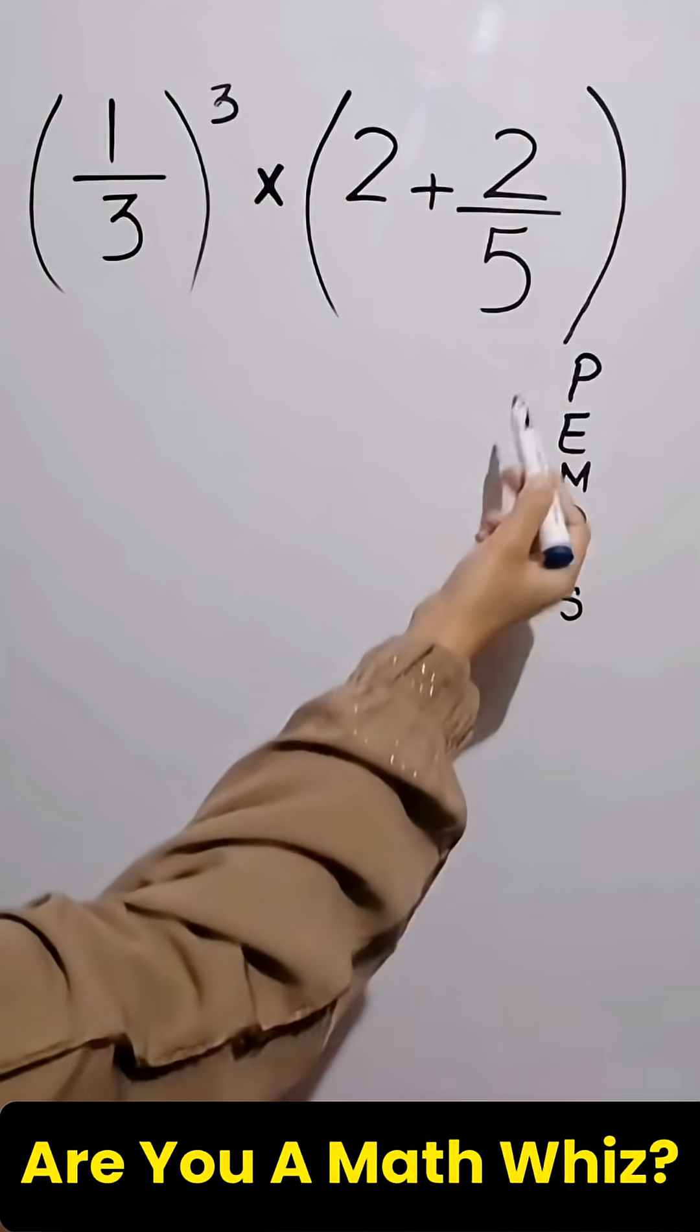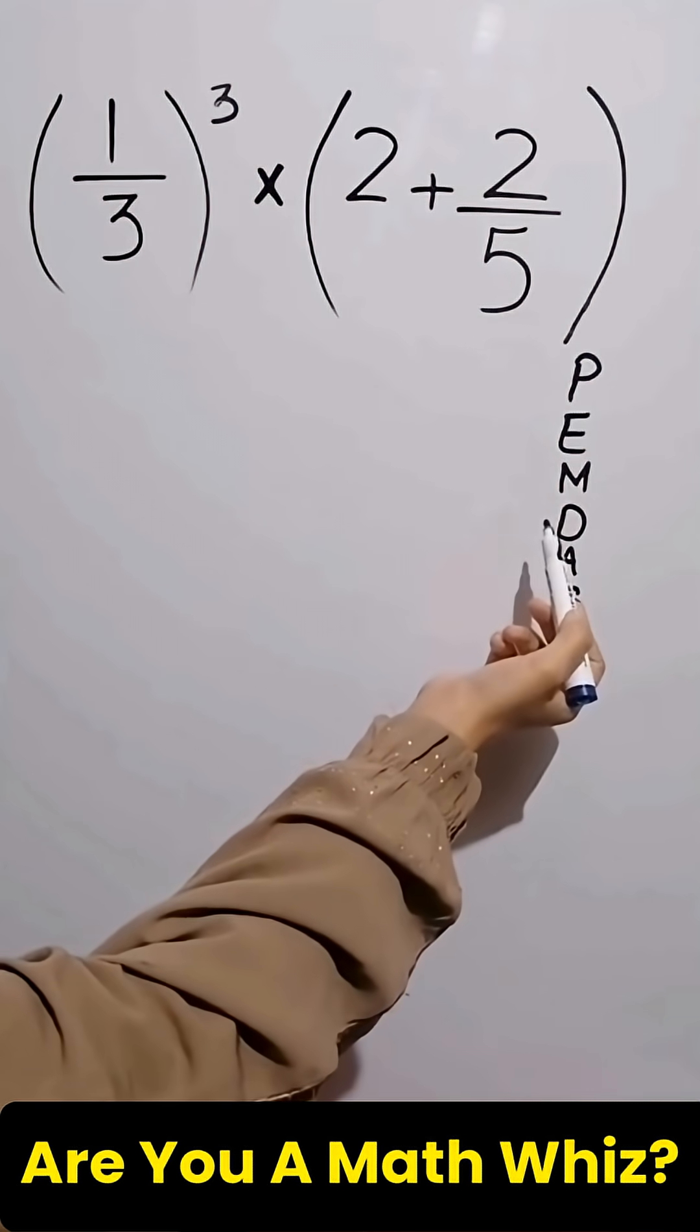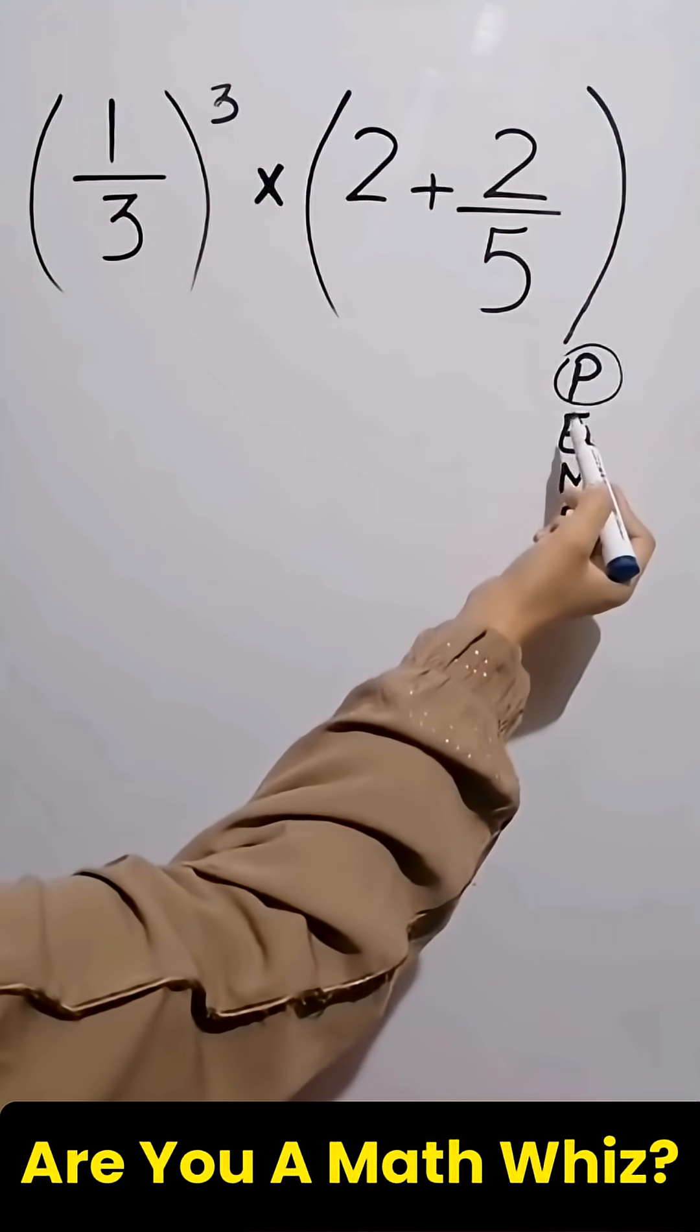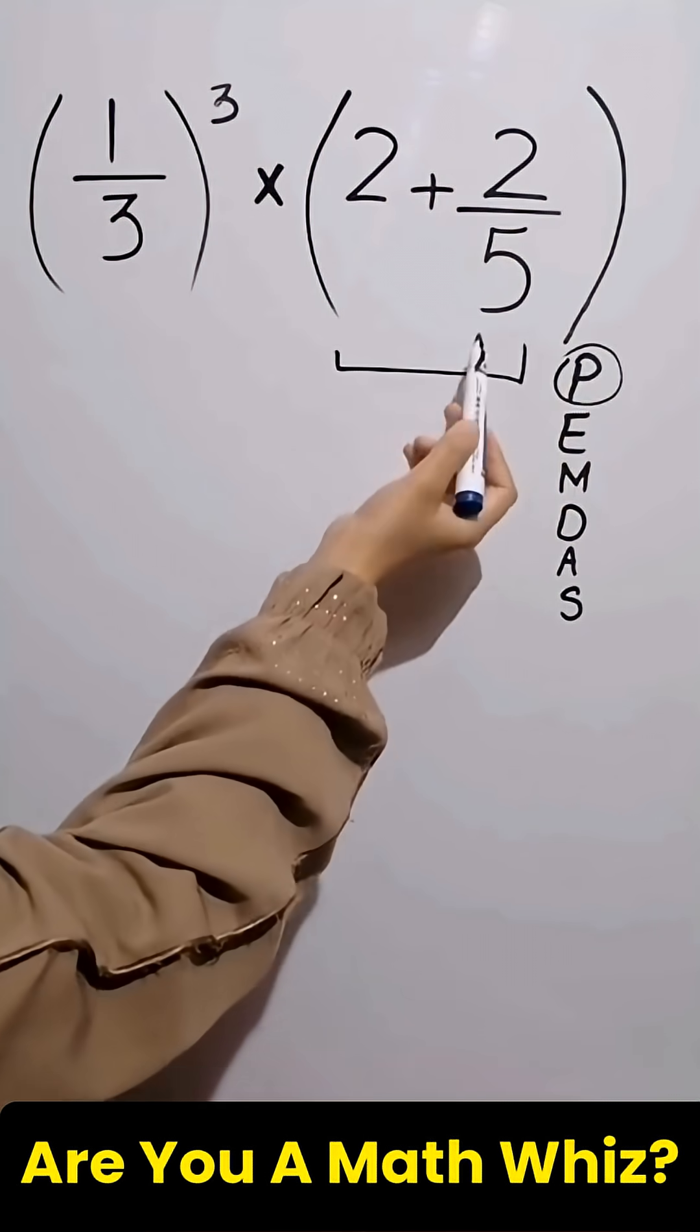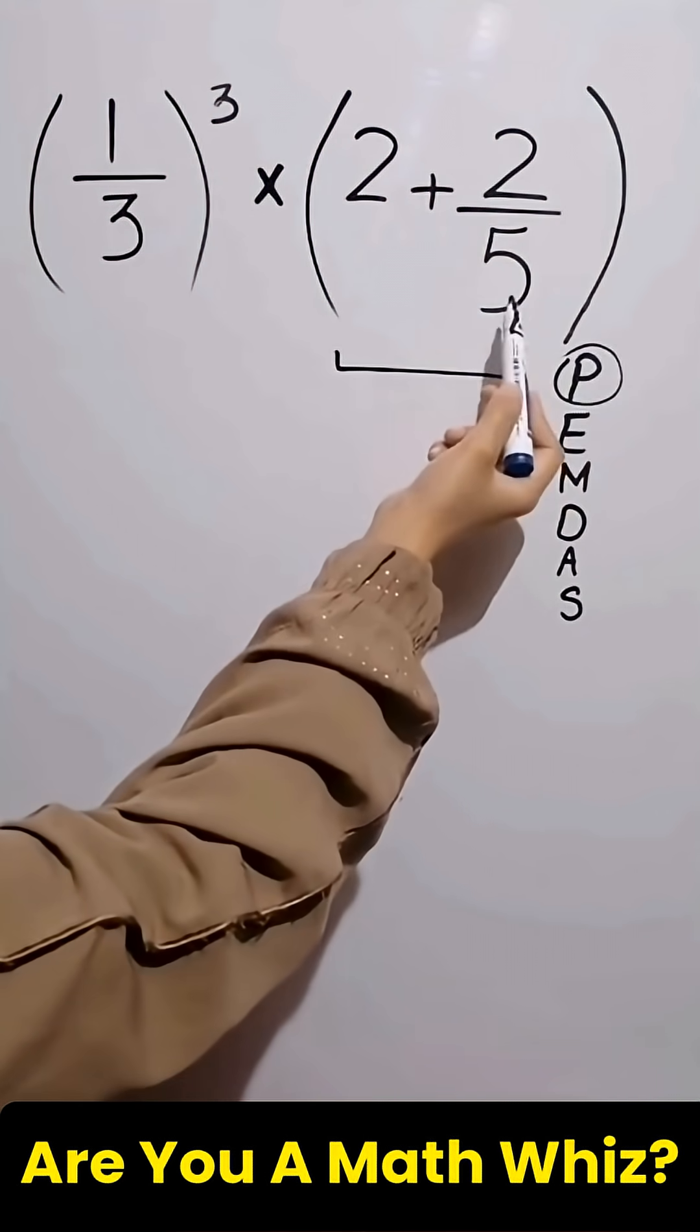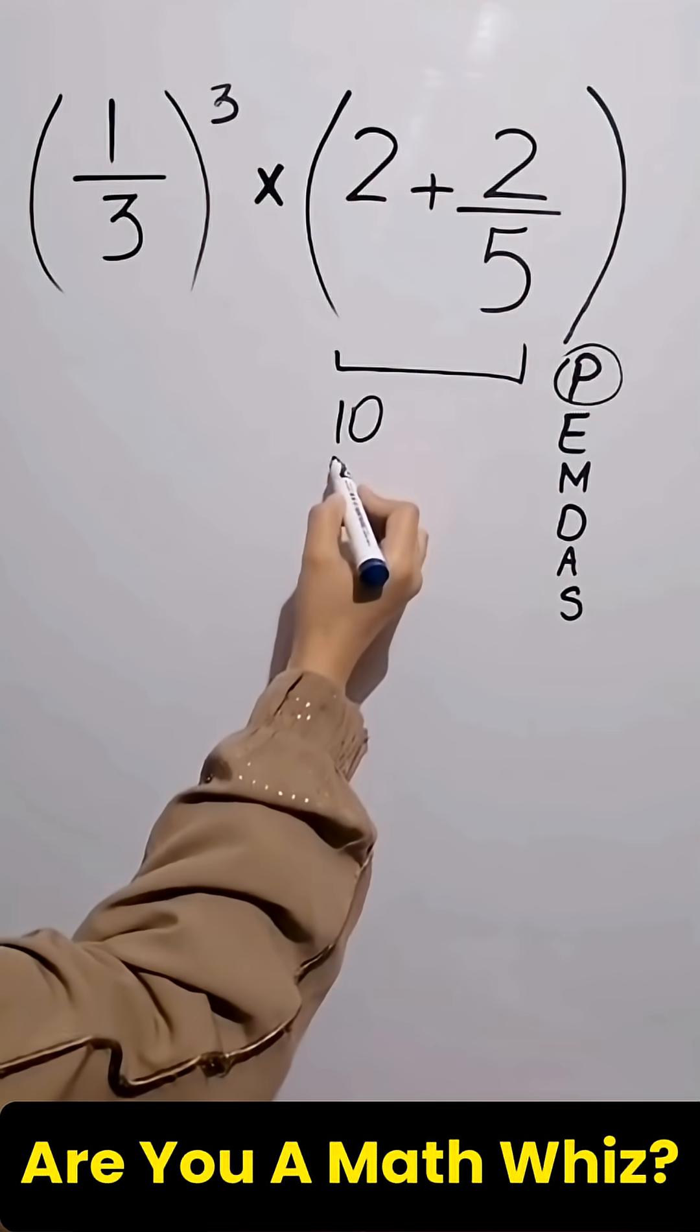According to the PEMDAS rule in this question, first we simplify the parenthesis. Inside the parentheses we have 2 plus 2 over 5. Since the denominator of this fraction is 5, we can write 2 as 10 over 5.